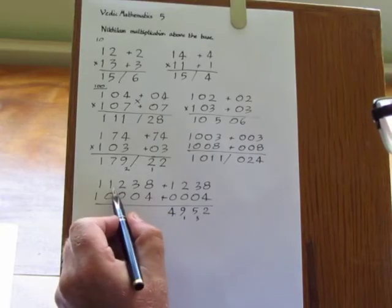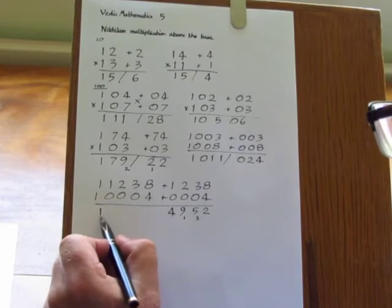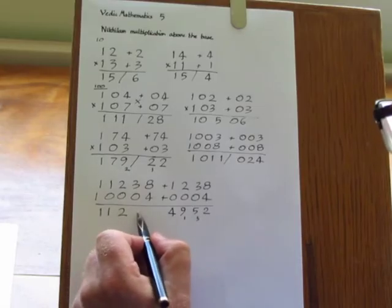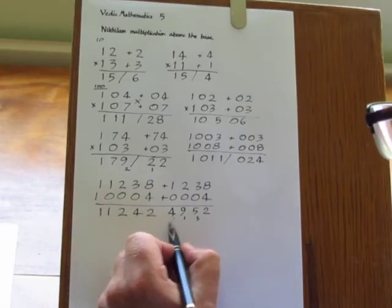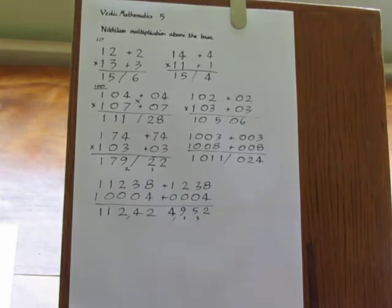4 times 1 is 4. And cross add giving 111242. And that's the answer.